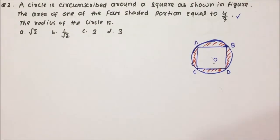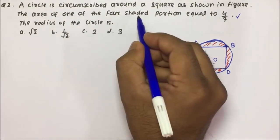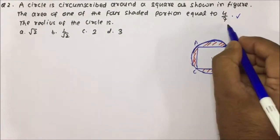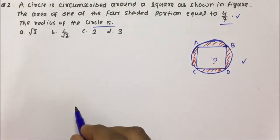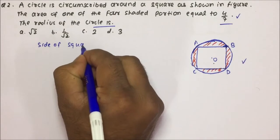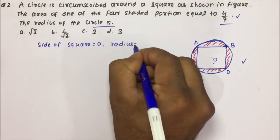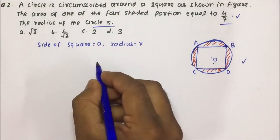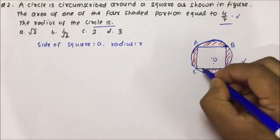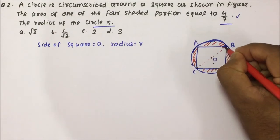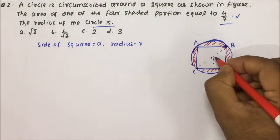Now friends, moving towards the next question. Question number 2 is a very important question. A circle is circumscribed around a square as shown in the figure. The area of one of the four shaded portions equals 4/7. We have to calculate the radius of the circle. Let us assume the side of the square is A and the radius of the circle is R. The diagonal of the square is the diameter of the circle, so the diagonal equals 2R.